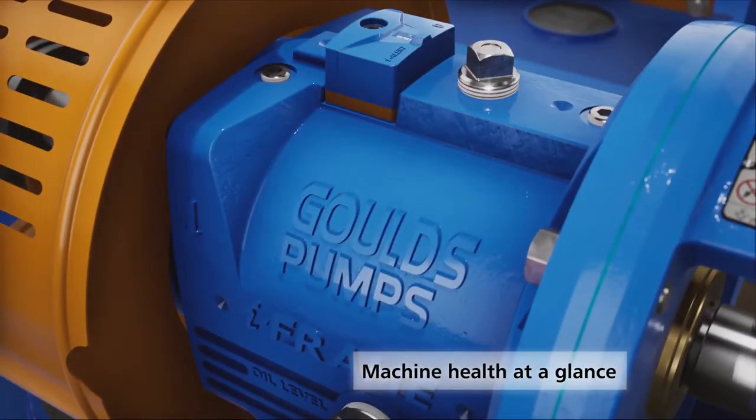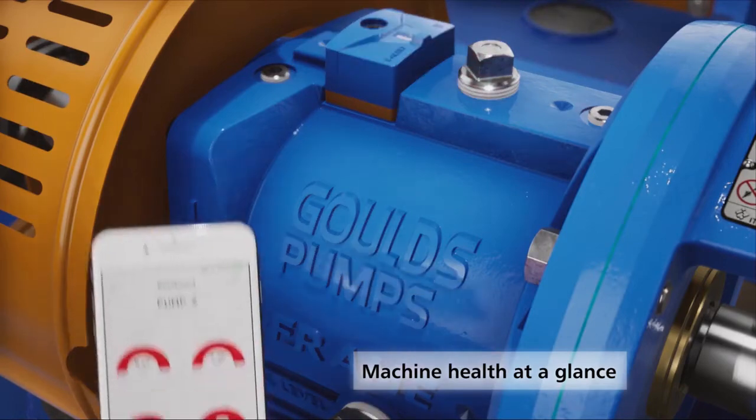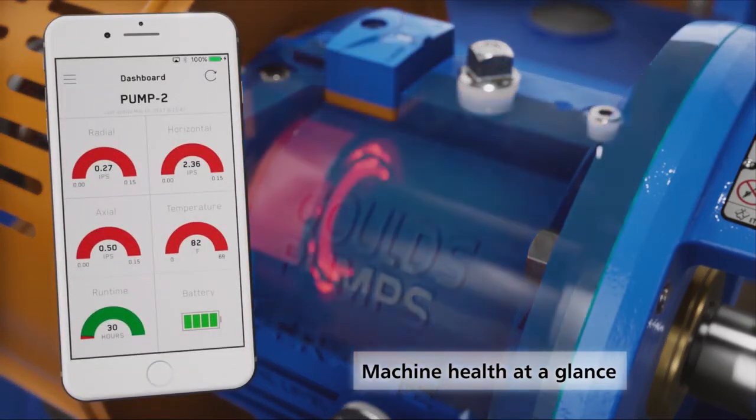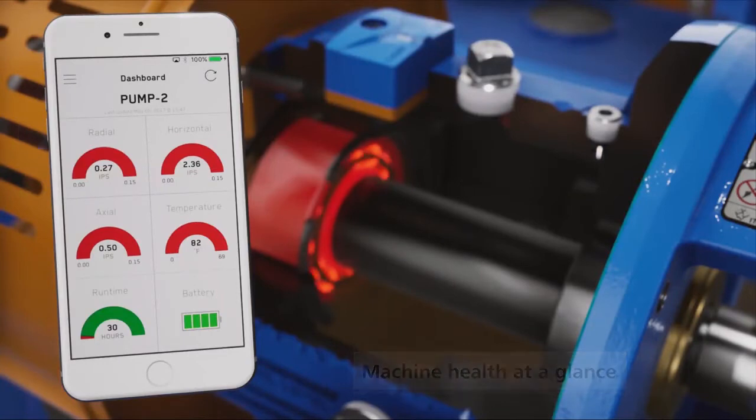If the vibration or temperature rises above the set limits for two consecutive readings, the iAlert 2 will begin to blink red and broadcast an alarm message. The broadcasted alarms can be picked up by Bluetooth-equipped phones or tablets in the area.